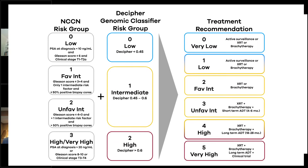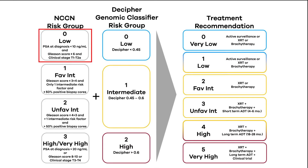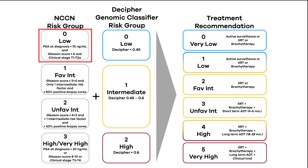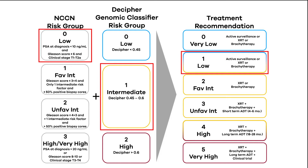Patients who have low-risk disease — NCCN low risk and a Decipher low risk — you sum those numbers together and get zero. They're very low. Those patients should best be managed by active surveillance. But if they were unwilling to consider surveillance, we would offer them radiation therapy in the form of either external beam treatment or brachytherapy monotherapy. Likewise, patients with low-risk disease and an intermediate risk Decipher score would get monotherapy, either radiation alone or brachytherapy, though many are also candidates for active surveillance.